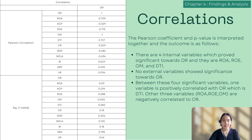Four internal variables proved significant towards operational ratio: ROA, ROE, operating margin, and debt-to-income ratio. Of these four, debt-to-income ratio is positively correlated to the dependent variable, while ROA, ROE, and operating margin are negatively correlated to operational ratio. No external variable shows significance towards operational ratio.